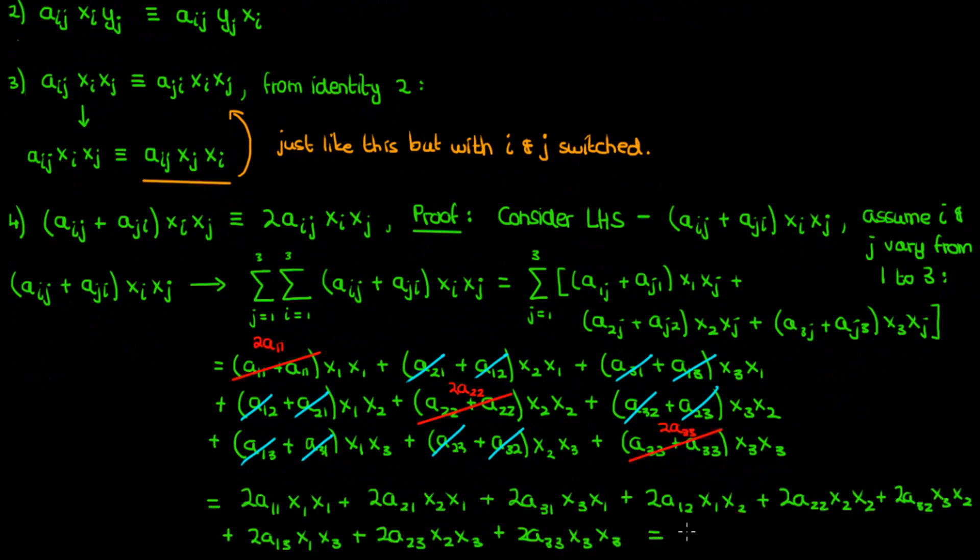And if we simplify this by combining the dummy indices and applying the Einstein summation convention, we end up with 2aij times xi times xj, which is exactly the right-hand side of the fourth identity, so therefore we've proven the fourth identity.